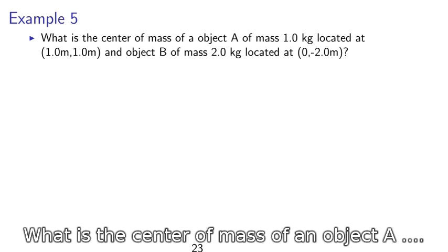Example 5, what is the center of mass of an object? Center of mass of object A of mass 1 kg located at 1 m, 1 m. And object B of mass 2 kg located at x equals 0, y equals negative 2 m.